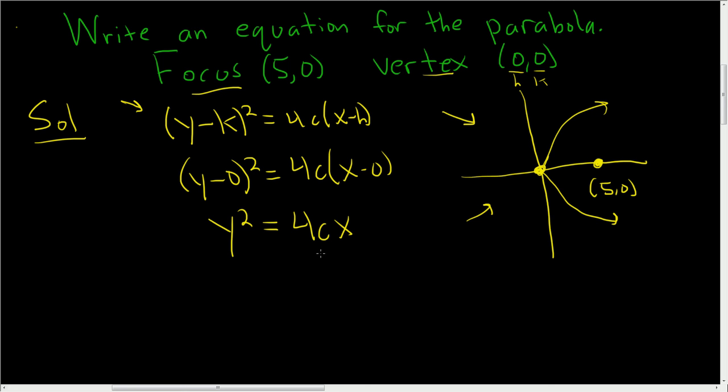Now we need to find c. Well, this distance here is c. In this case it's 5. Rather, the distance is the absolute value of c. Let's be careful. The absolute value of c equals 5. But since it opens to the right, c is 5. Why do you have to be careful? Because if it opens left, c would be negative.